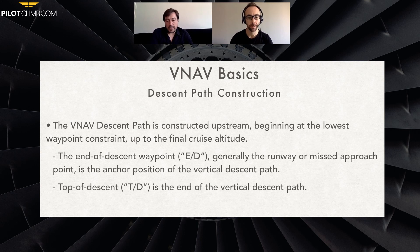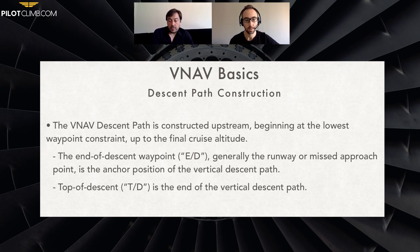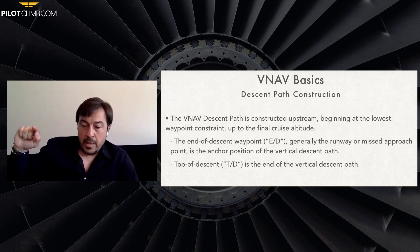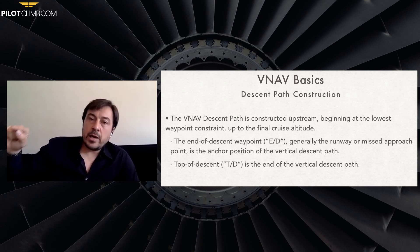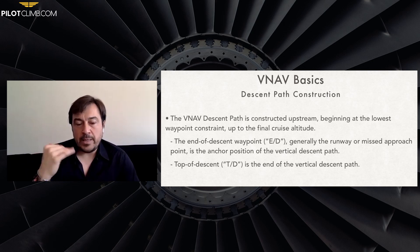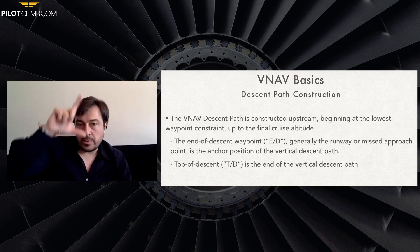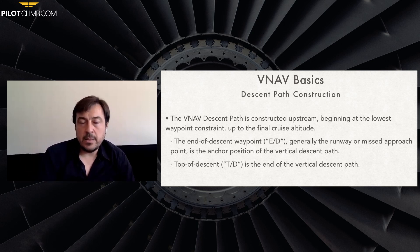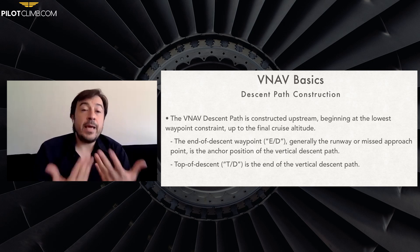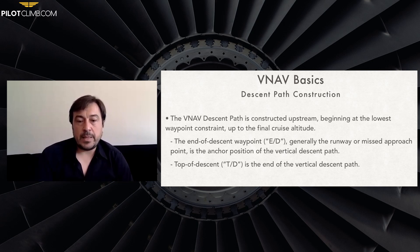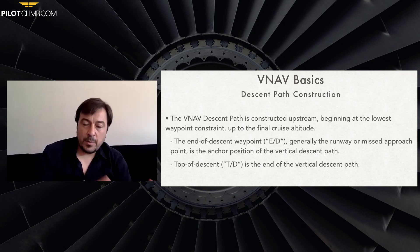The VNAV path is constructed upstream — that's really important to understand. Beginning at the lowest waypoint constraint up to the final cruise altitude, the end of the descent waypoint — generally the runway or missed approach point — is the anchor position of the vertical descent path. It basically creates a path from the runway or missed approach point upwards, all the way to the top of descent, usually a three-degree glide angle. The top of descent is the end of the vertical descent path.